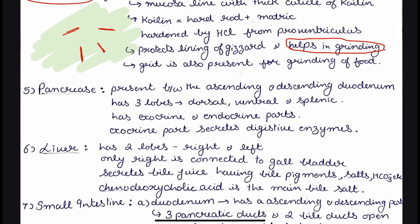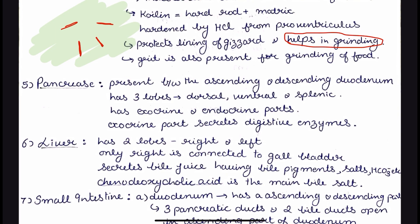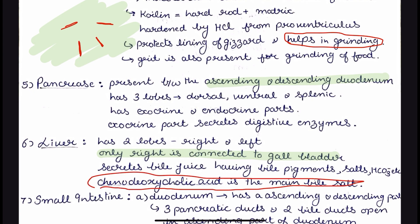Then we have the digestive glands: pancreas and liver. The pancreas is present between the ascending and descending parts of the duodenum. It has three lobes. The key point to remember about the pancreas is that it is located between the ascending and descending duodenum. In the liver, it has two lobes, and only the right lobe is connected to the gallbladder. One important point often asked in exams is that chenodeoxycholic acid is the main bile salt.